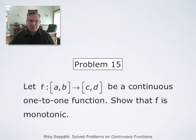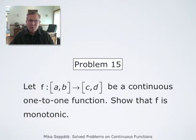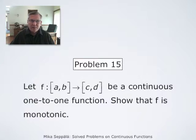In problem 15 of the set of solved problems on continuous functions, we study a function f, which is defined on the closed interval from a to b. Its values are in the closed interval from c to d. We assume that f is continuous and one-to-one. Our task is to show that f is monotonic.